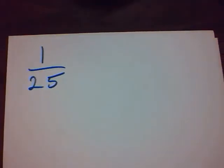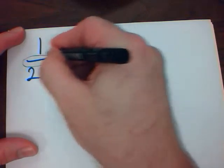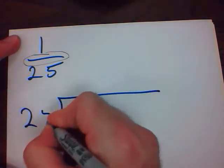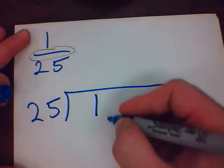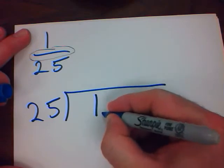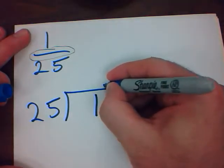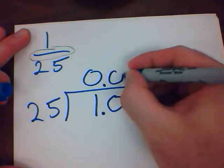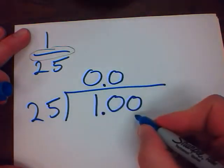Another example. Once again, remember, while this is a fraction, it is also division. 1 divided by 25. When I put it into this format, 1 divided by 25. 1 doesn't go into 25. I mean, 25 doesn't go into 1. Gives me a 0. 25 doesn't go into 10. 25 does go into 100.